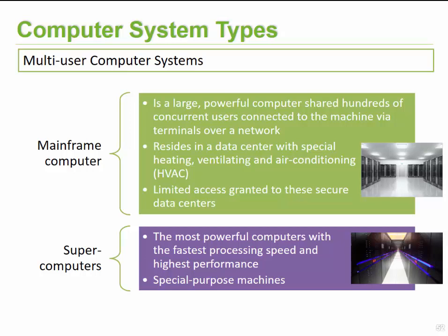The last category for multi-user computer systems is supercomputers. These are considered the most powerful computers, with the fastest processing speed and highest performance, and are very special purpose machines. For example, Disney and Pixar working on special effects would require these specialized computers because hundreds of thousands of tasks need to be conducted to get to the end product.